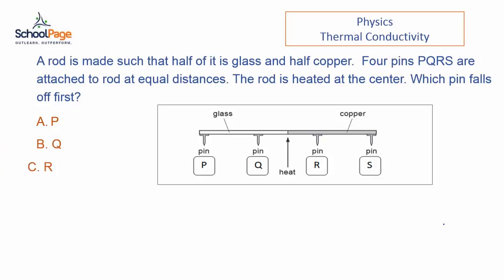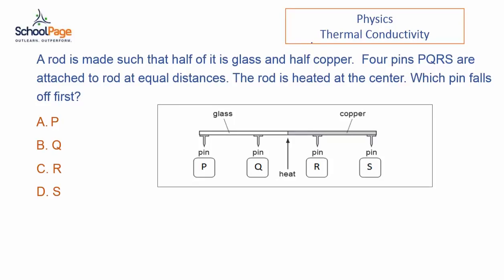The question is based on thermal conductivity. Thermal conductivity values give the rate of heat transfer through any material. Higher thermal conductivity value means more rapid heat transfer. Materials with higher conductivity values are called conductors, whereas those with lower conductivity values are called insulators.